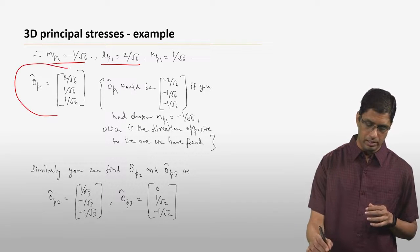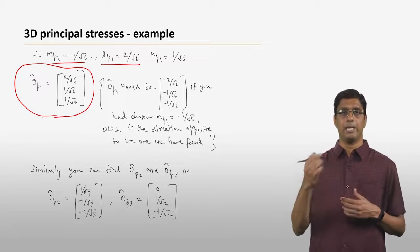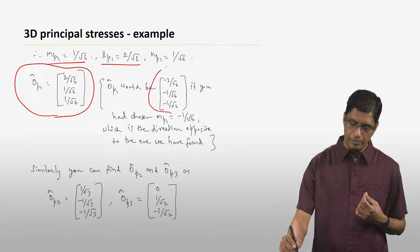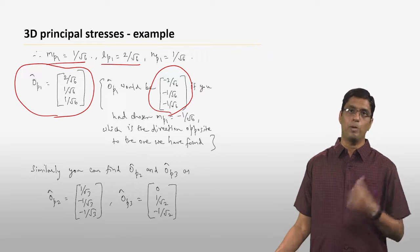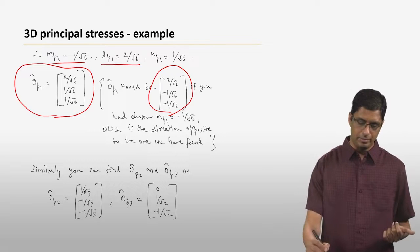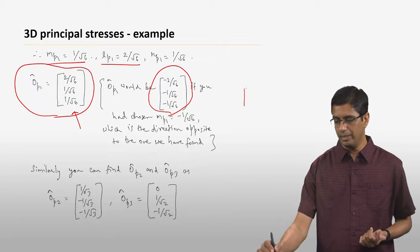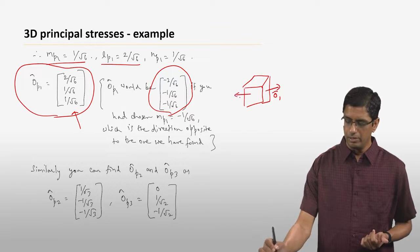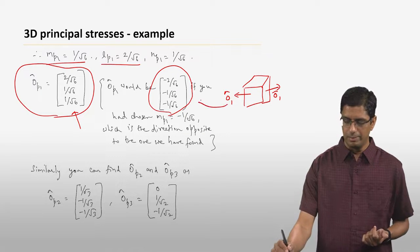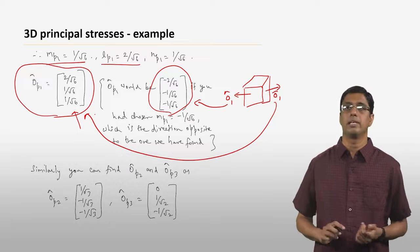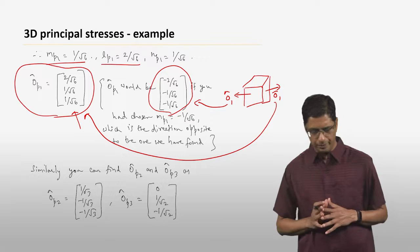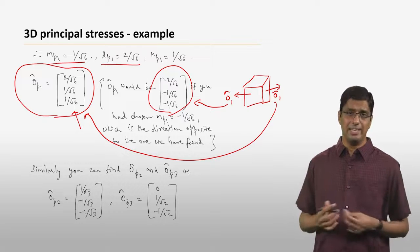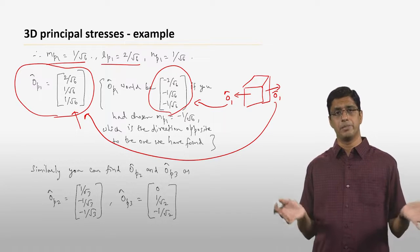If you had taken mp1 to be minus 1 over square root of 6, then op1 would point in the opposite direction — essentially 180 degrees opposite. If you think about a cube, both normals point to opposite faces of the same plane, so there's nothing really distinct between those two directions. This is just a convention: we take the positive square root. You can use an exactly identical procedure to find op2 and op3, which are principal directions 2 and 3.